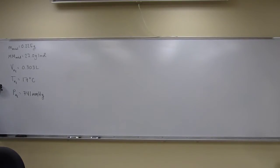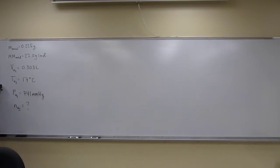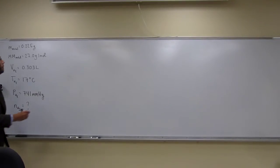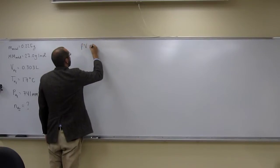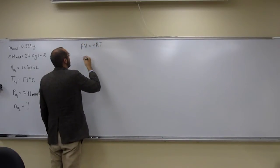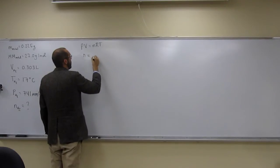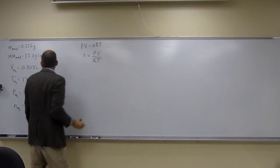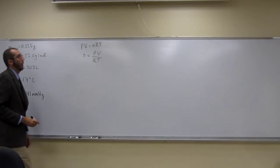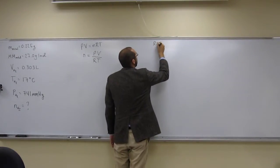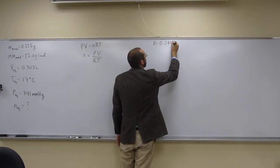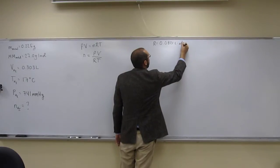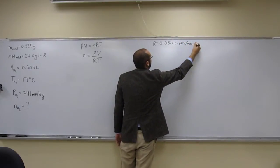Let's find the number of moles of hydrogen gas. We're going to use PV = nRT for hydrogen and solve for n, so n = PV / RT. R is given as 0.0821 liter·atm per mole·kelvin.